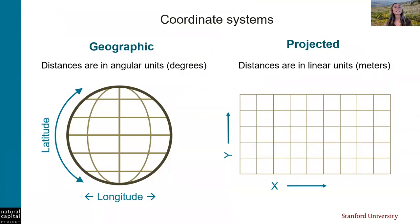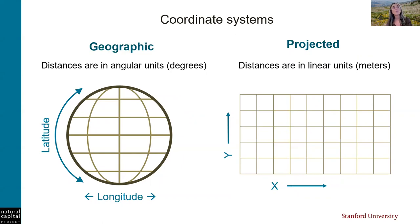A coordinate system defines how the locations of a two-dimensional digital map are related to actual locations on the Earth. There are two types: geographic and projected. Geographic coordinate systems define distances with angular units in degrees, while projected coordinate systems define distances with linear units, usually in meters. Most InVEST models require all inputs to be in exactly the same projected coordinate system with linear units in meters. One exception is coastal vulnerability. Always read the user guide to learn about data requirements for each model.